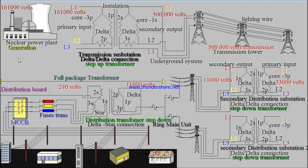Once the power leaves the power plant, it moves to the transmission substation, which has a delta connection. See the delta connection — this is the primary side or primary core, it has a delta connection. And then the secondary output also has a delta connection. That's why we say delta-delta connection — it's a step-up transformer. The input voltage is 161kV and the output voltage is 500kV. Through an underground system, we transmit it through transmission towers. On top of the towers, we have lightning wire.